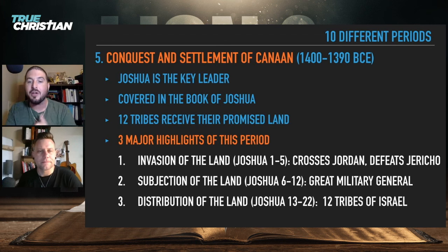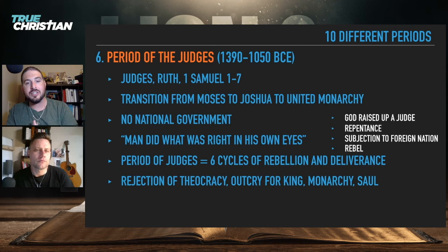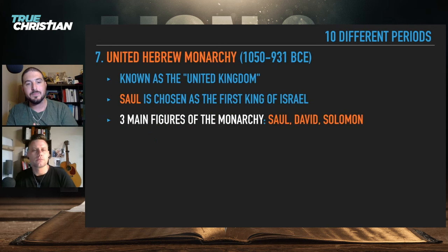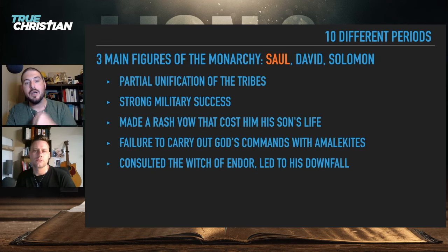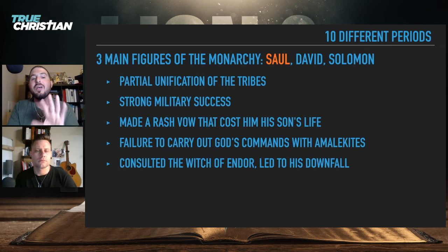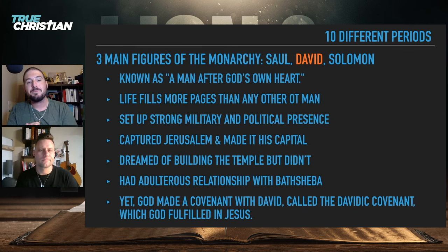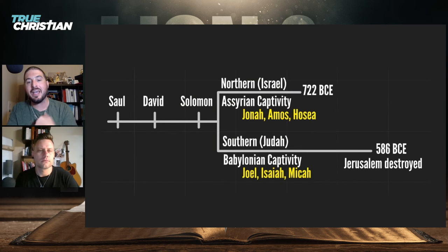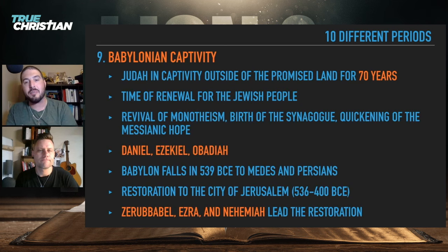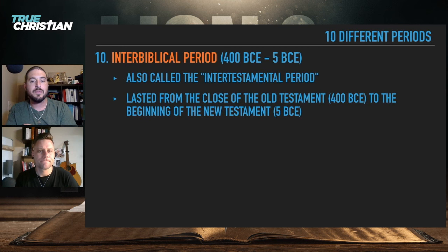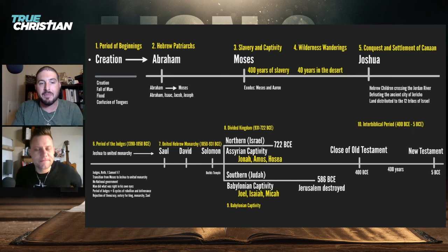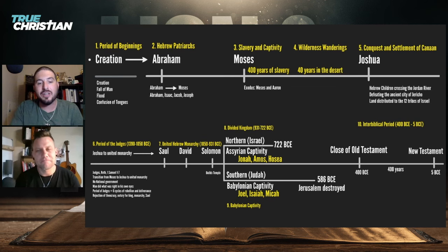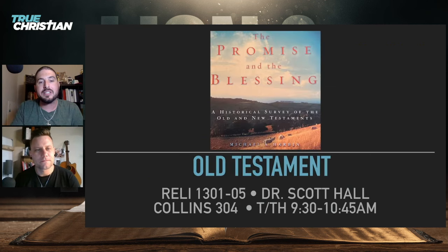Moving through slavery and captivity, wilderness and wanderings, the period of judges — the united Hebrew monarchy. The three main figures of the monarchy are Saul, David, and Solomon — the three kings. We'll be going into all of this later. Then the timeline overview — screenshot this if you want it. That's all from the slides, and I'm glad Dr. Hall let me share them.